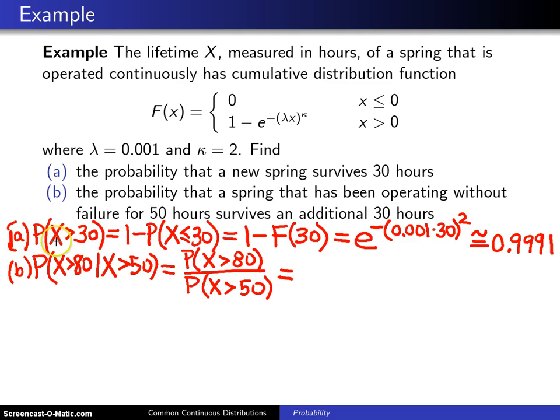Now using exactly the same argument that we had earlier, this is going to be 1 minus capital F of 80, divided by 1 minus capital F of 50.